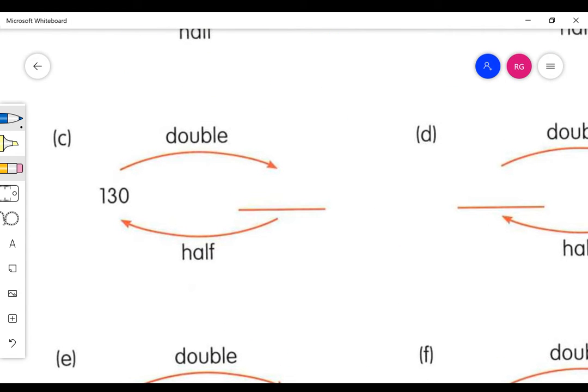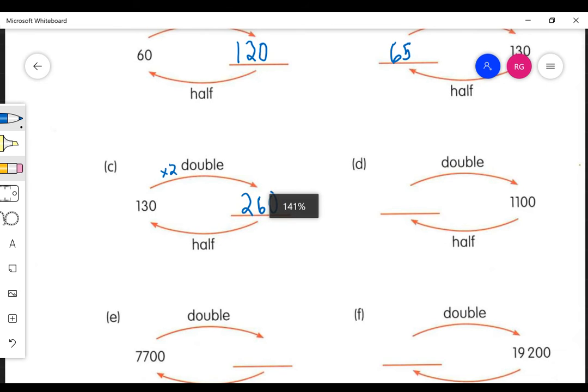And then for C, it says half of this number is 130. So really, we take 130 times 2 here, and we get 260. And that should do it for that one.